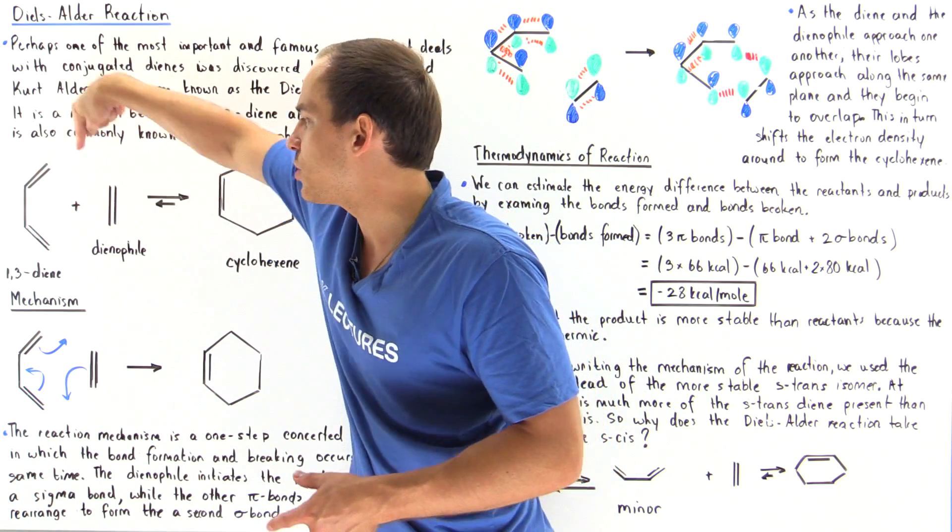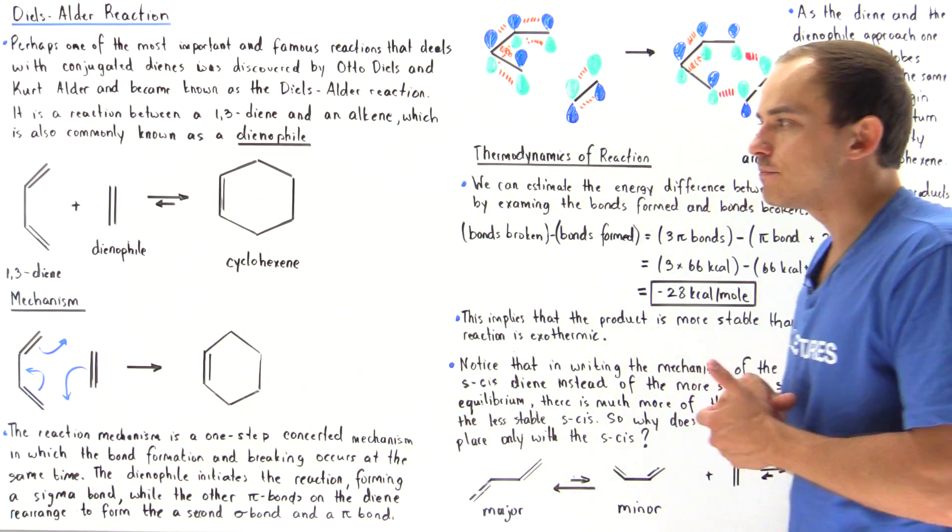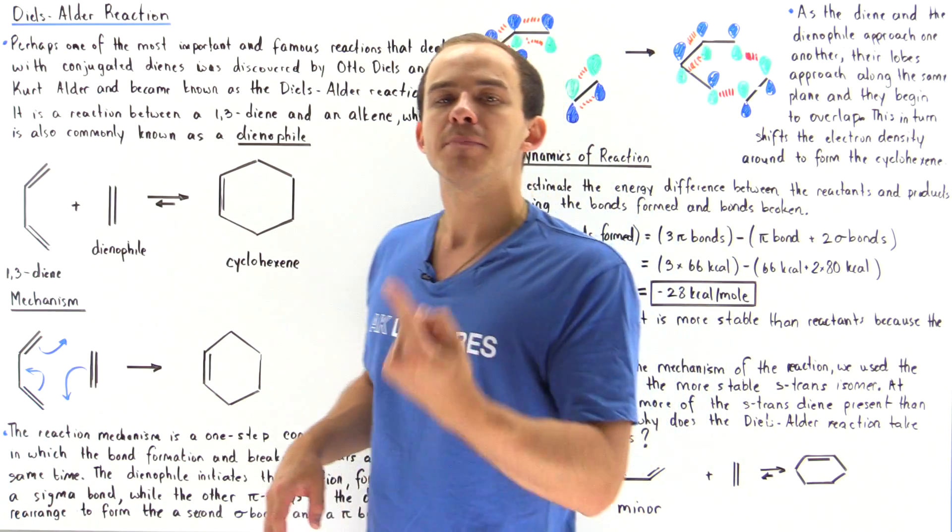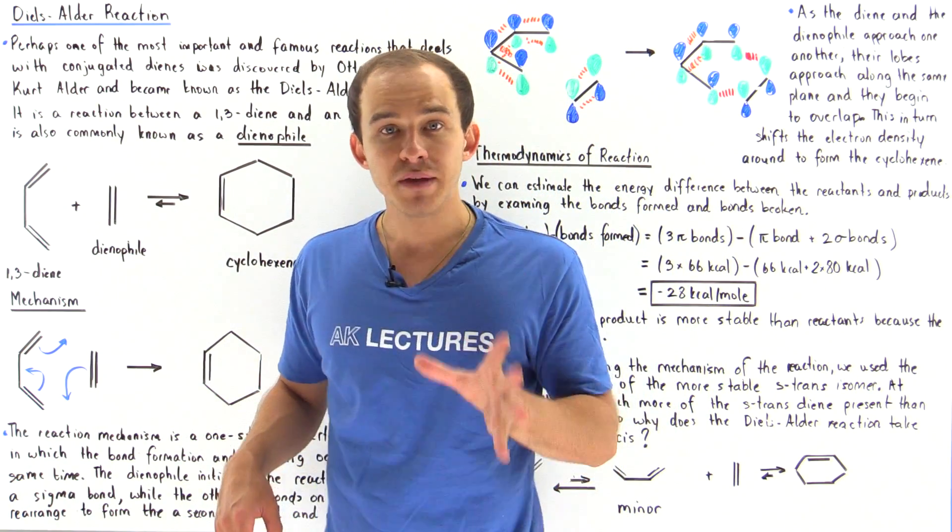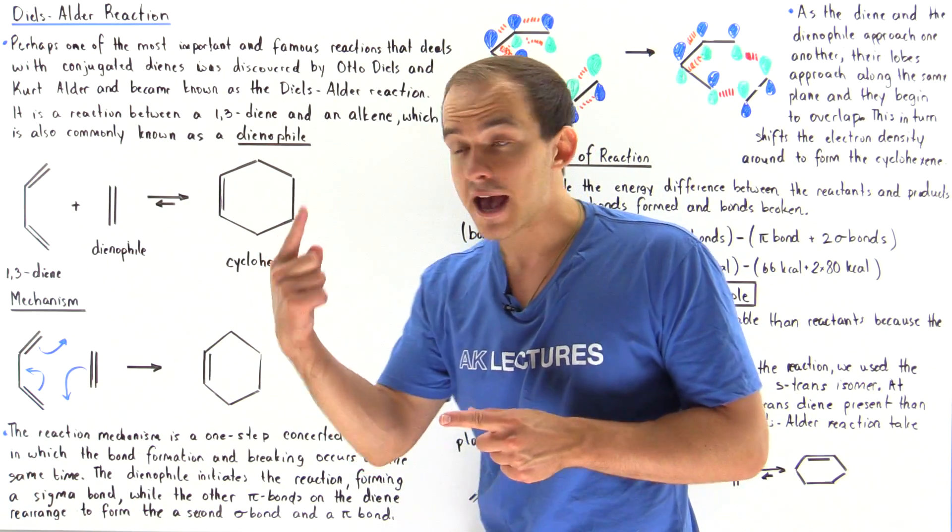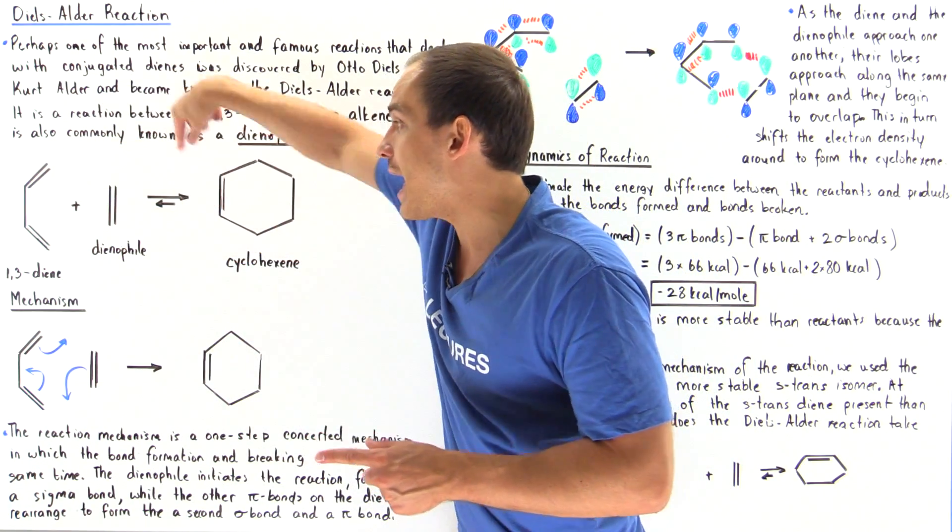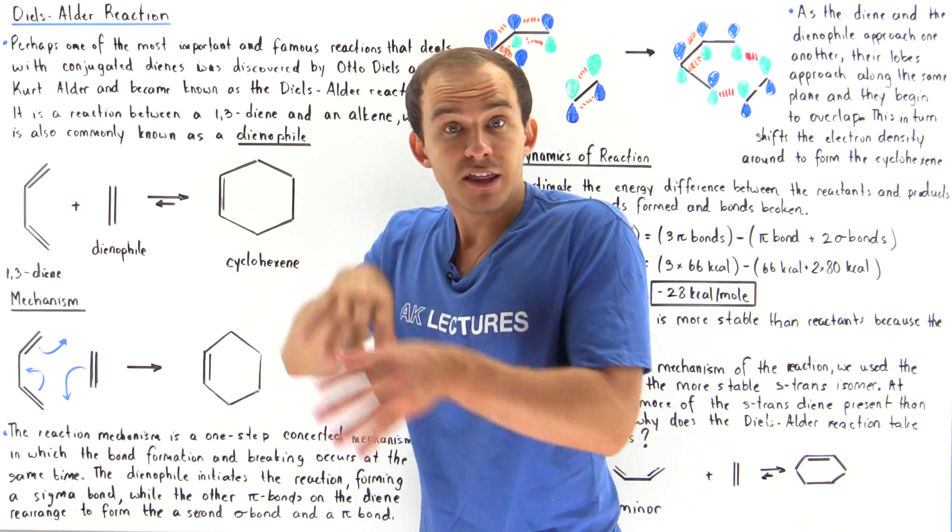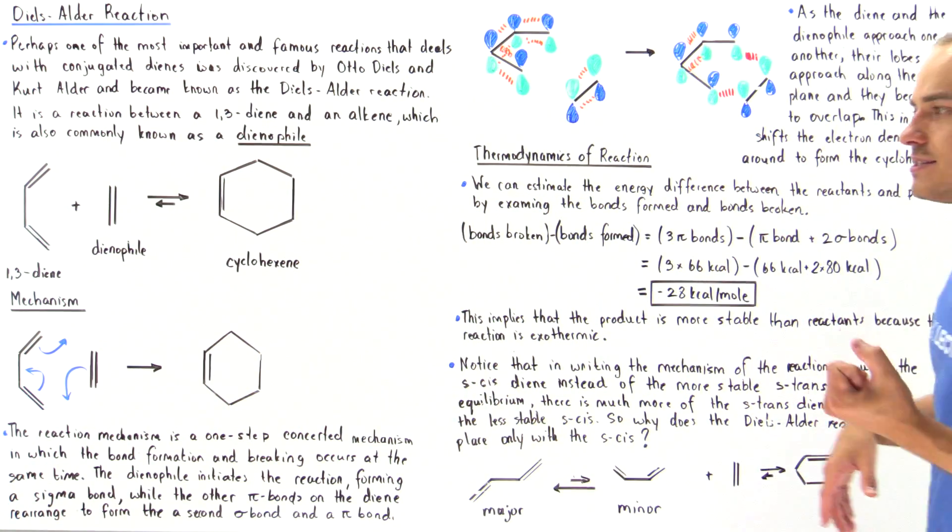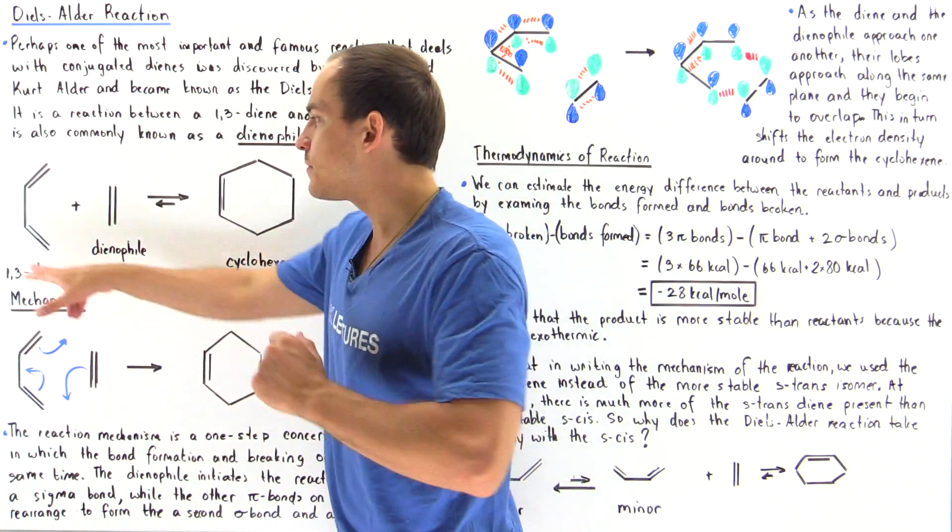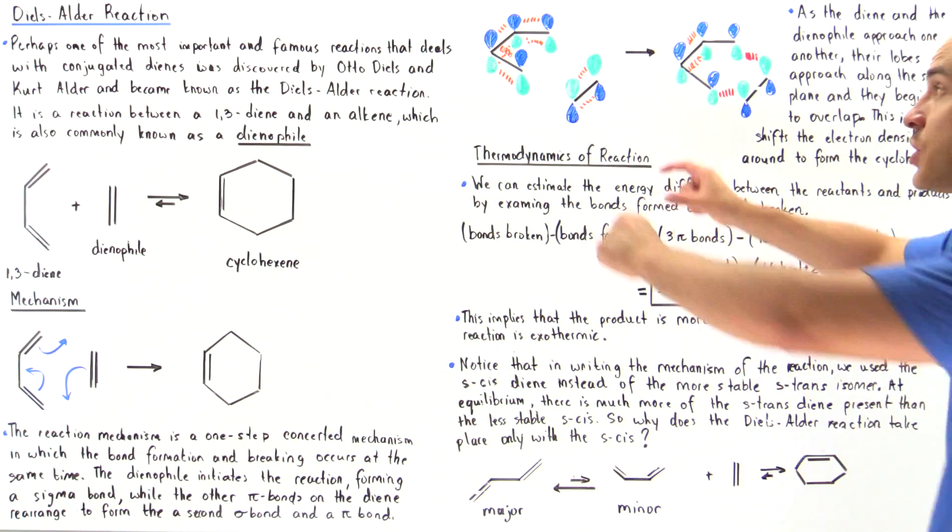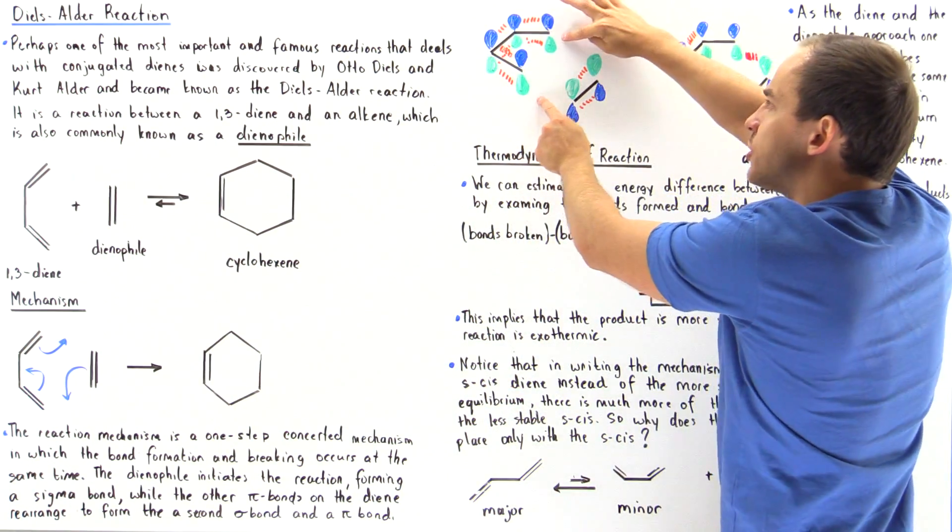Now the mechanism of this reaction is a one-step concerted mechanism, and that means not only is the step via a single step, all the bonds formed and all the bonds broken take place at the same exact time. The reason that we must have the cis 1,3-diene and not the trans